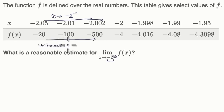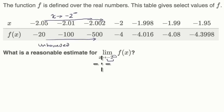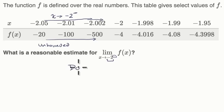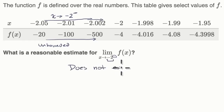And so technically, I would write this is unbounded. So if this was a multiple choice question, technically you would say the limit as x approaches negative 2 from the left does not exist. It does not exist.